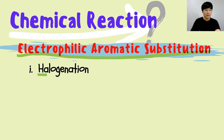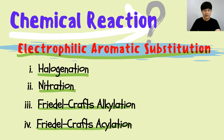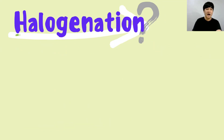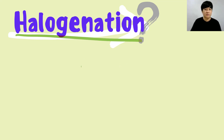Just a reminder: we have four types of electrophilic aromatic substitution — halogenation, nitration, Friedel-Crafts alkylation, and Friedel-Crafts acylation. Let's start with halogenation, which is very simple and straightforward.